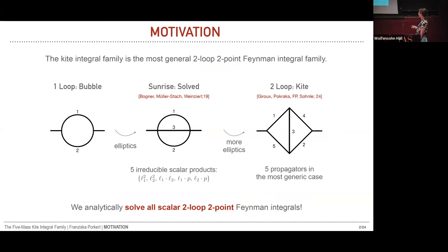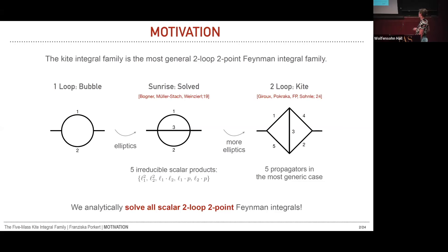The sunrise integral contains five reducible scalar products but only three propagators, so it's only the subtopology of a larger diagram with five propagators called the kite diagram. This is then the most generic two-loop two-point graph one can construct in a scalar QFT, and solving it is even more complicated because it contains even more elliptics than the sunrise integral.